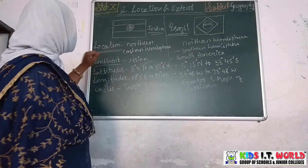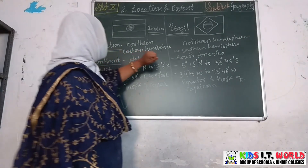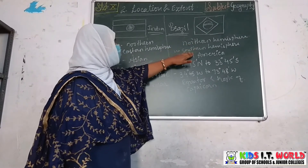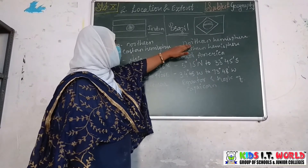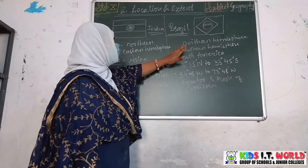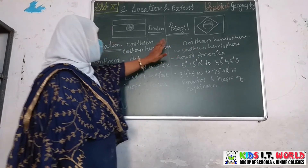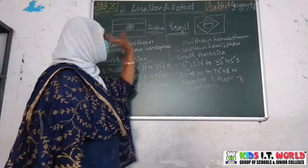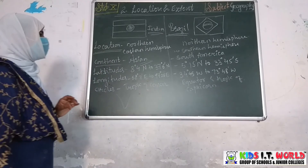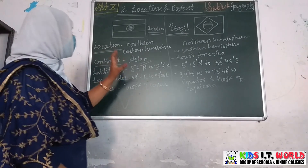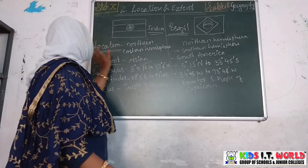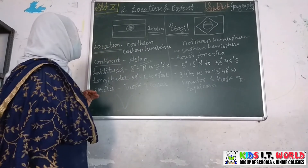Regarding the location of Brazil: Brazil lies in both the Northern and Southern Hemispheres — a small part is in the Northern Hemisphere and most of the part is in the Southern Hemisphere. The western part lies in the Western Hemisphere.